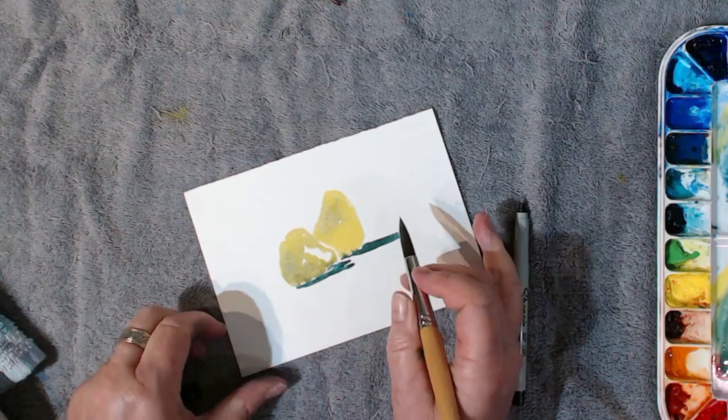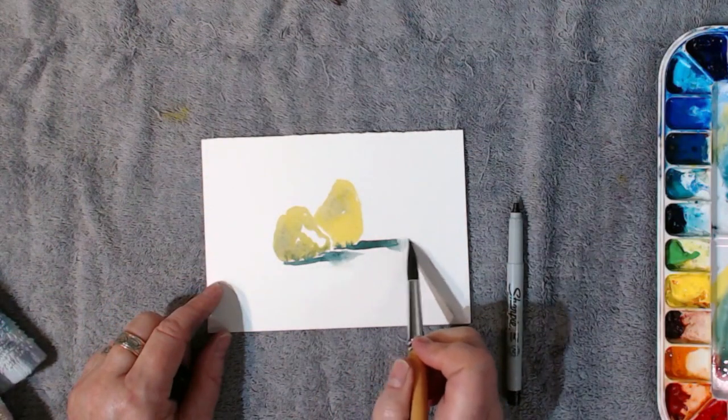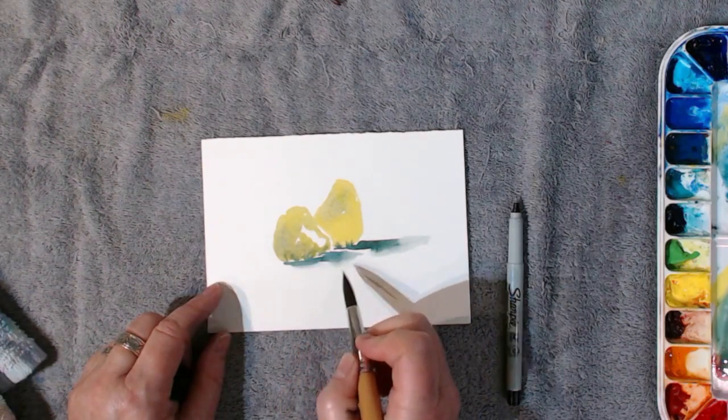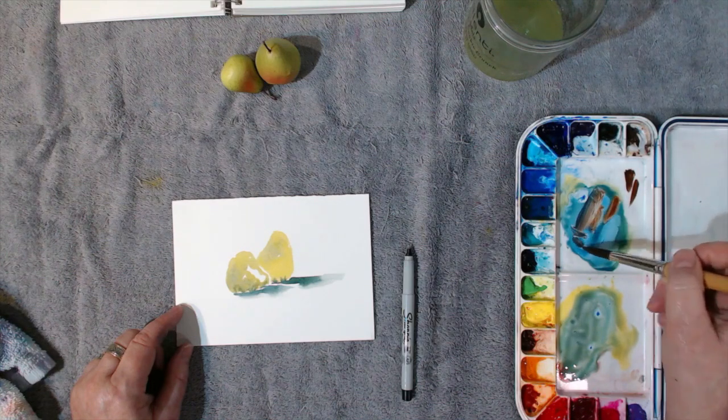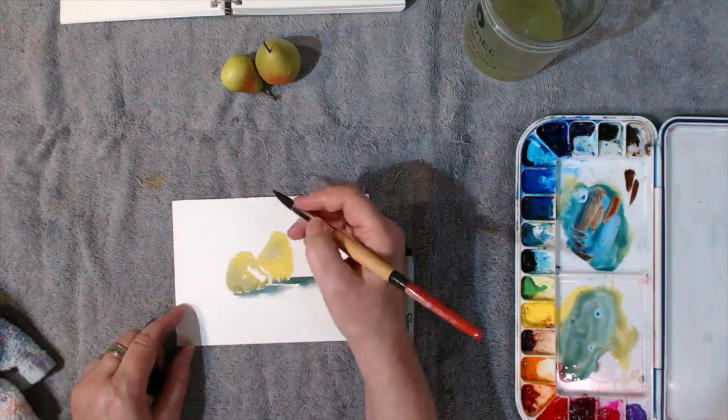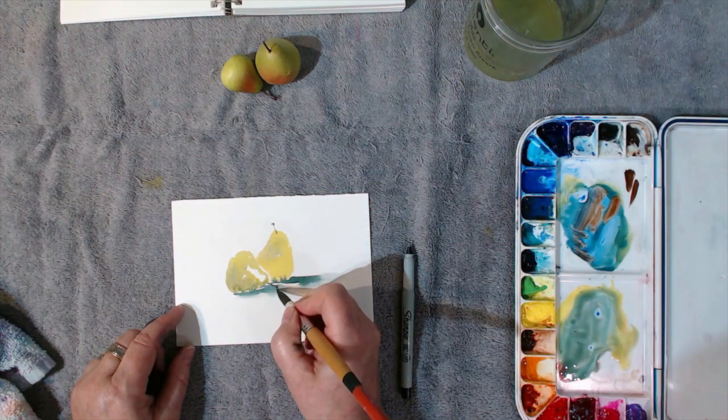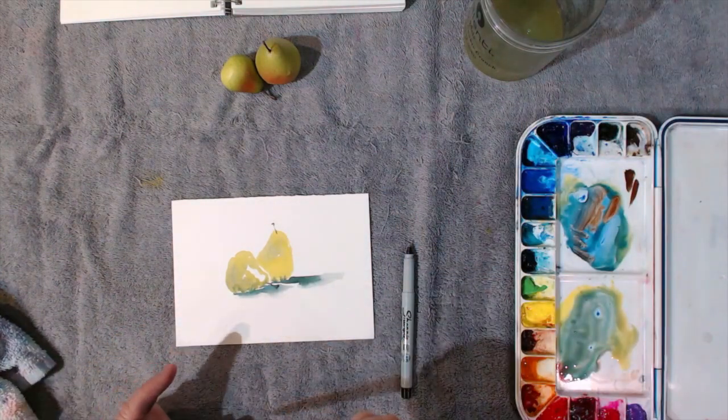Since I don't, I'm going to leave that little bit of a white edge. Let's go in and put our little stems in. Mix up a kind of dark gray-brown, just a little brush drying here to put in our stems.